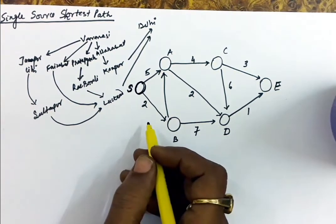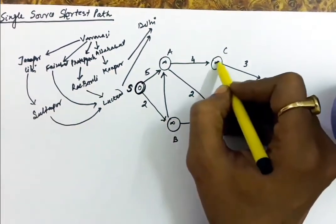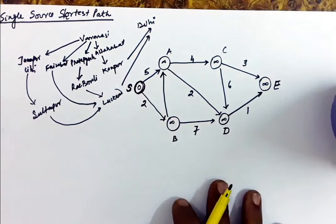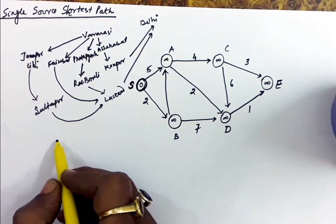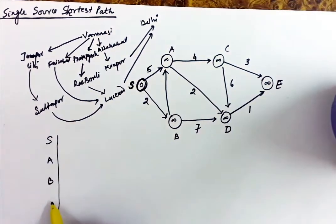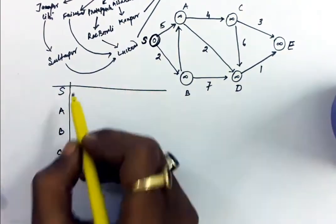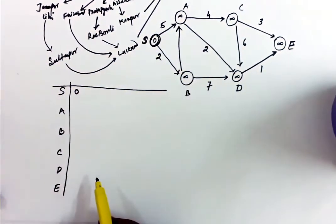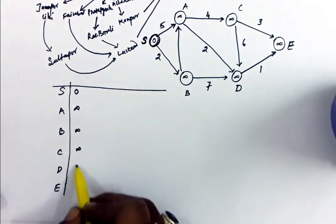For finding out the single source shortest path, one method that can be applied is: take the distance of the source as 0, and consider that the distance of every other vertex is infinite. The distance of the source is taken as 0 and the distance of every other vertex is taken as infinite. The method I am going to follow is very similar to what we did in Prim's algorithm.